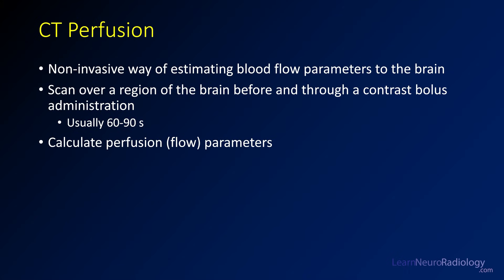CT perfusion is a non-invasive way of estimating blood flow. It's fast and accessible in many ERs. You scan a region of the brain before giving contrast and then throughout a contrast bolus, typically scanning for about 60 to 90 seconds. From the blood flowing through the area, you calculate perfusion parameters — how fast blood is getting there (cerebral blood flow) and the total amount of blood getting to a region (cerebral blood volume). From that, you can determine if an area is likely completely infarcted or if it's tissue at risk — what we call penumbra.